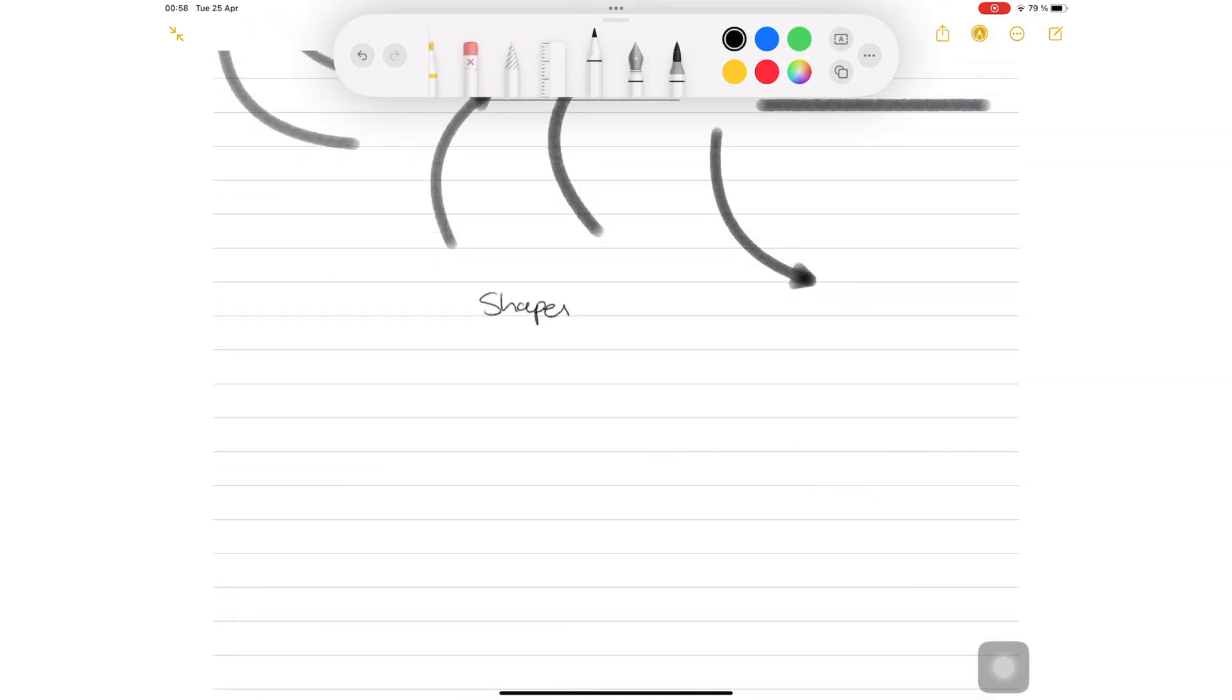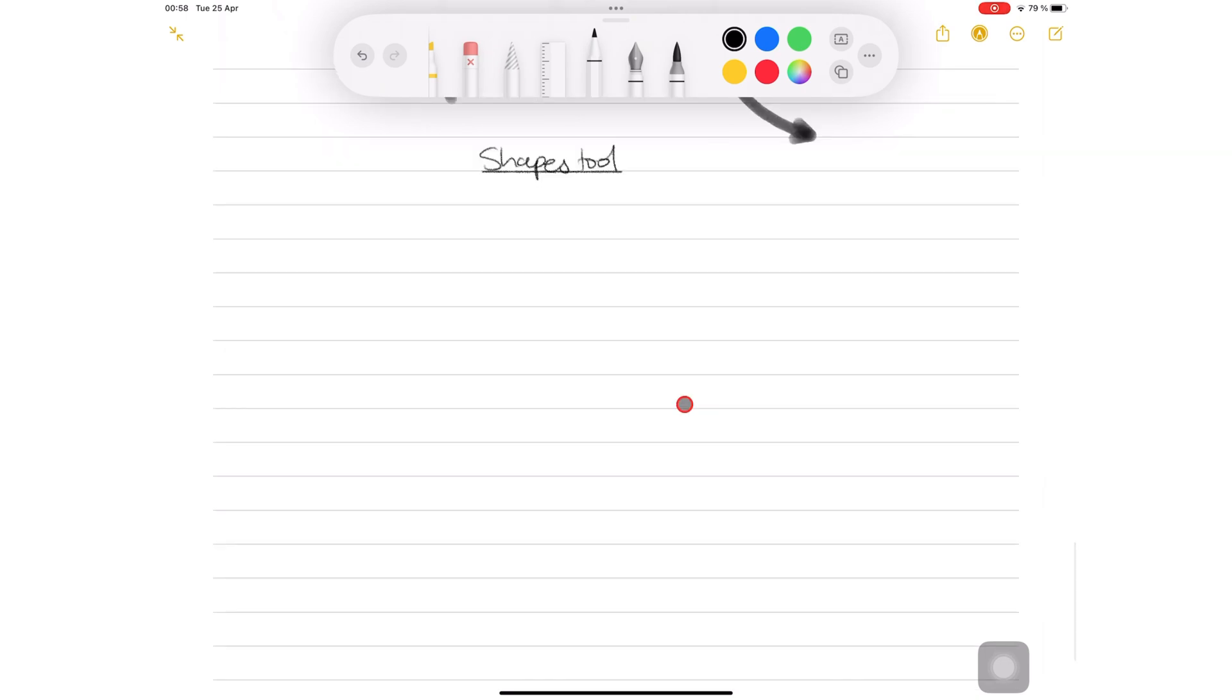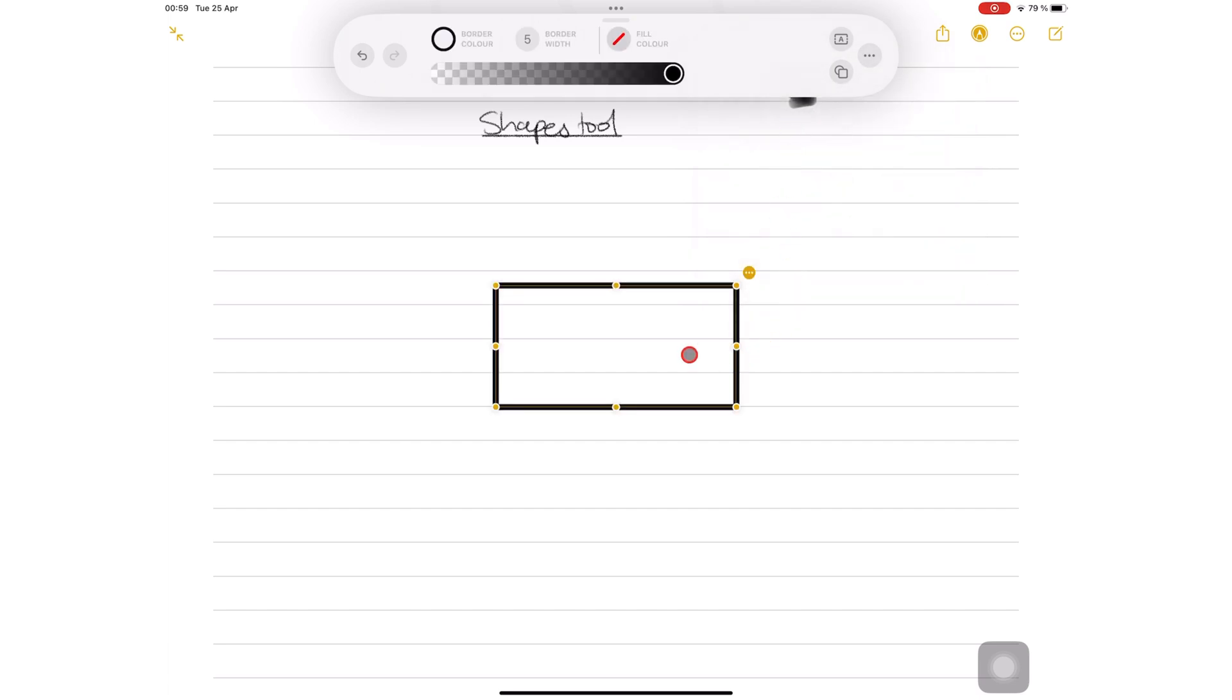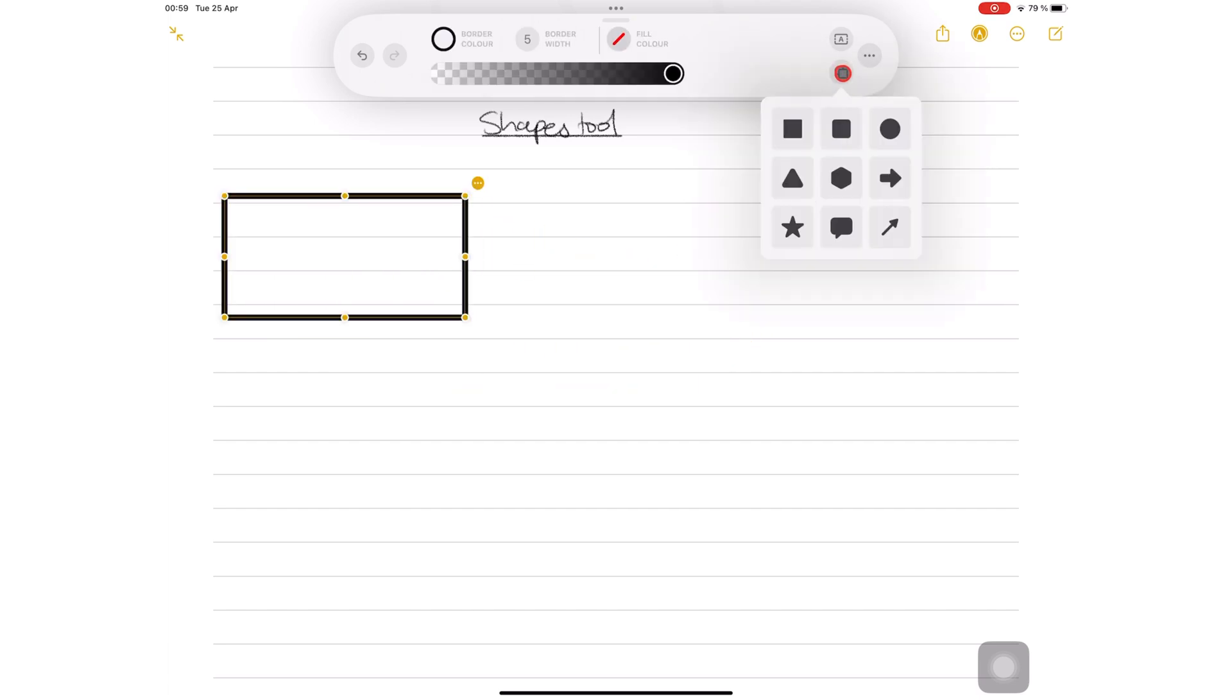Using the shapes tool on the toolbar, you can add the shapes listed under it. You can adjust these shapes once you've added them to your notes.